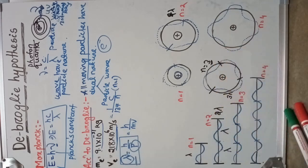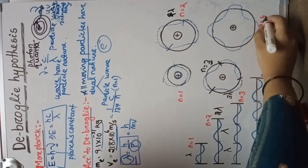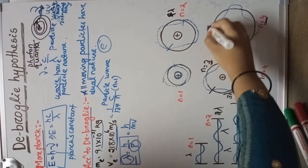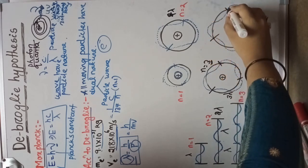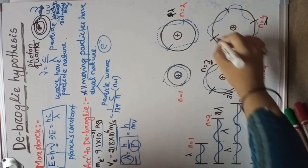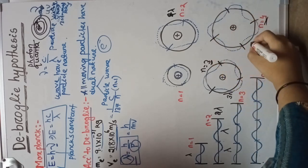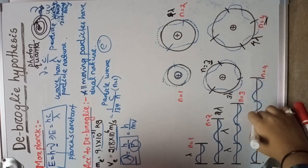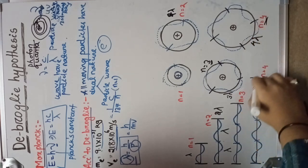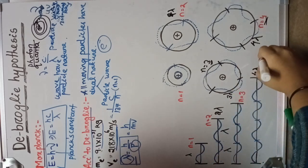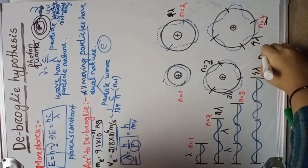In the case of the fourth orbit, n equals to 4 — one, two, three, and four — so the total wavelength is four lambda. Like this, for the nth orbit the total wavelength is n lambda.